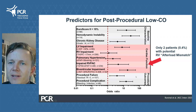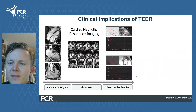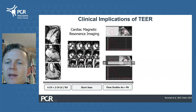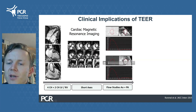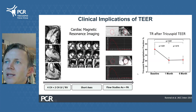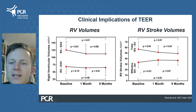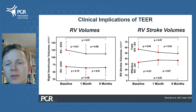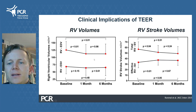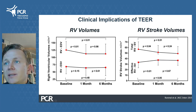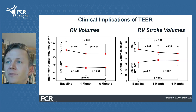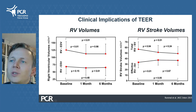Now that we understand what doesn't happen, let's explore what does. Using cardiac magnetic resonance imaging, which provides excellent quantification of cardiac volumes and flow, we can appreciate that when we perform tricuspid edge-to-edge repair we actually reduce tricuspid regurgitant fraction, consistent with a reduction in TR. This is accompanied by reduction in right ventricular end-diastolic volumes, consistent with a reduction in RV preload. Total RV stroke volume is increased consistent with the reduction in regurgitant volume, and effective forward stroke volume — meaning stroke volume going from the RV to the pulmonary artery — is enhanced.